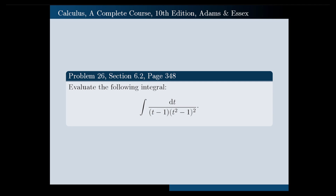Hello, in this video I'm going to solve the following problem. Let us read the problem together first. Evaluate the following integral: the integral of dt over (t minus 1) times (t squared minus 1) squared. It would be a good idea if you pause the video at this point and try to solve the problem yourself first.